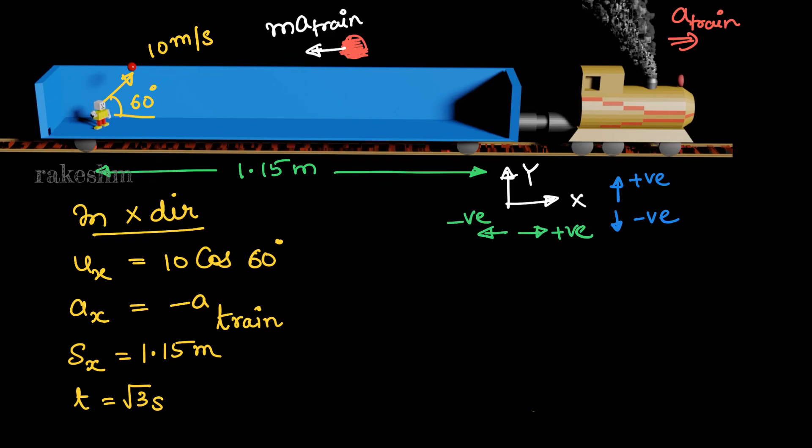So we can write the equation sx equals to ux into t plus half ax into t square.